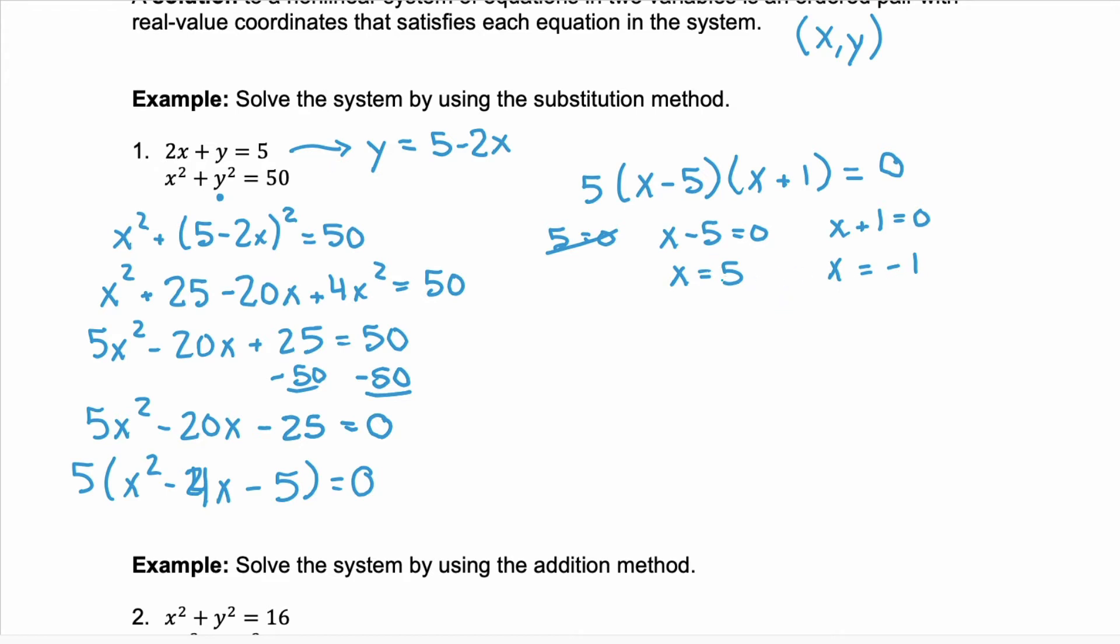So now that you have your x value, you're going to substitute that back into your equation. We can use y equals 5 minus 2x to get the y coordinate. Our first value when x equals 5, y equals 5 minus 2 times 5, which is 5 minus 10 or negative 5. That gives us the ordered pair 5, negative 5.